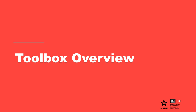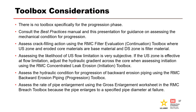There is no toolbox specifically for the progression phase. Please consult the best practices manual and this presentation for guidance on assessing the mechanical condition for progression. Assess crack filling action using the RMC filter evaluation continuation toolbox, where an upstream zone and eroded core materials are the base material and the downstream zone is the filter material. Assessing the likelihood of upstream flow limitation is very subjective; if the upstream zone is effective at flow limitation, adjust the hydraulic gradient across the core when assessing initiation using the RMC concentrated leak erosion initiation toolbox. Assess the hydraulic condition for progression of backward erosion piping using the RMC backward erosion piping progression toolbox, and assess the rate of pipe enlargement using the gross enlargement worksheet in the RMC breach toolbox.